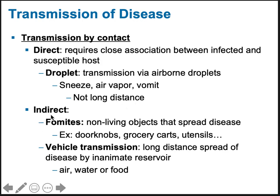Indirect transmission can be long distance — via air, water, food, or fomites, which are non-living objects that can spread disease. You touch something someone else touched, such as a doorknob, grocery cart, or gas station pump. If they didn't wash their hands before touching these objects, they could place their bacteria or viruses on those surfaces, and then you come along and touch them. If you don't wash your hands, you might ingest it or touch your nose, eye, or mouth.